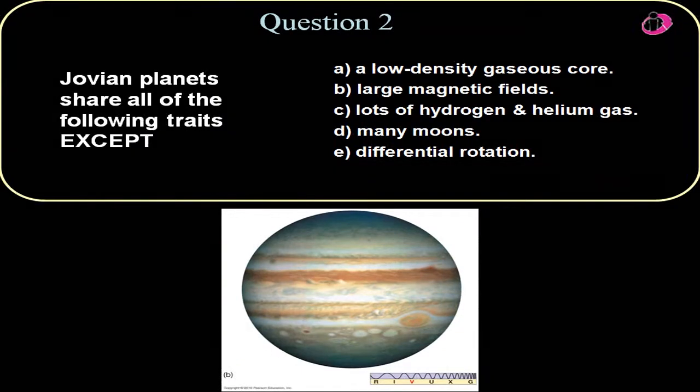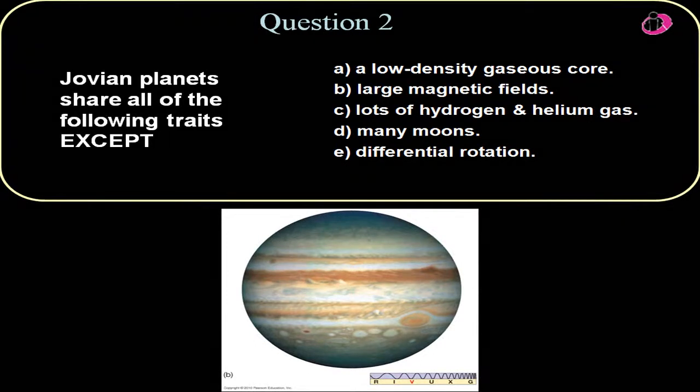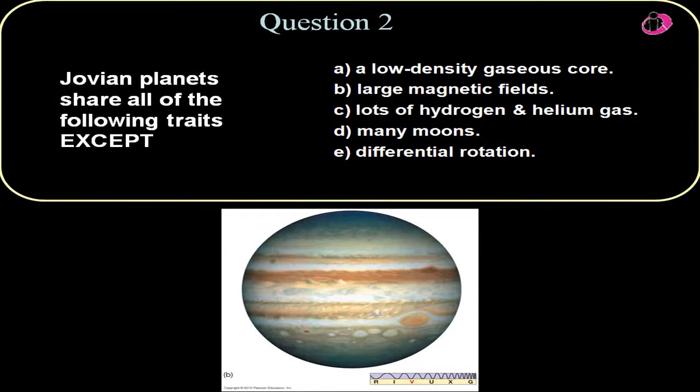Question number two. The Jovian Planets share all the following traits except. Well, they all have differential rotation. They all rotate differently at the equator than they do in the poles. In the case of Jupiter and Saturn, it's faster at the equator than the poles. In the case of Uranus and Neptune, it's slower at the equator than the poles. But in either case, it's differential rotation.